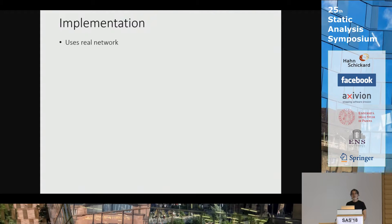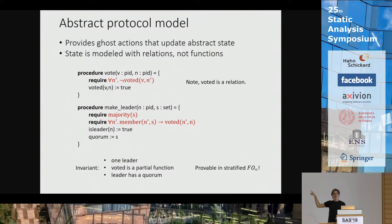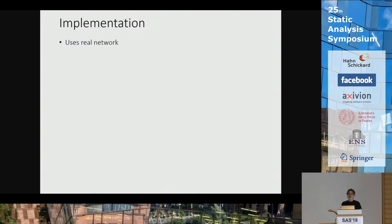We can verify this with a simple inductive invariant stating: first, there's only ever one leader; second, voted is a partial function (nobody votes twice); third, if there's a leader, it has a correct quorum. This invariant is provable purely in first-order logic with equality — no arithmetic, no function cycle, so it's in stratified first-order logic. I can now use that as a lemma to prove the correctness of the implementation.